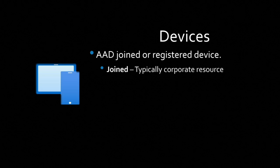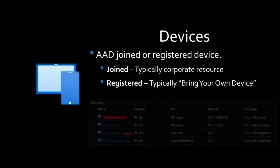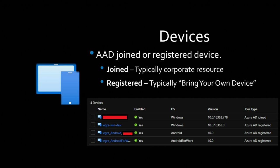A device can be AAD joined or AAD registered, and there's a difference. A joined AAD device is typically a corporate resource — computers, servers — owned by the company and usually part of a domain. A registered device is typically bring-your-own-device (BYOD). For example, an Android phone would be AAD registered because Microsoft doesn't own it, while corporate domain-joined PCs or VMs are joined directly to Azure AAD.